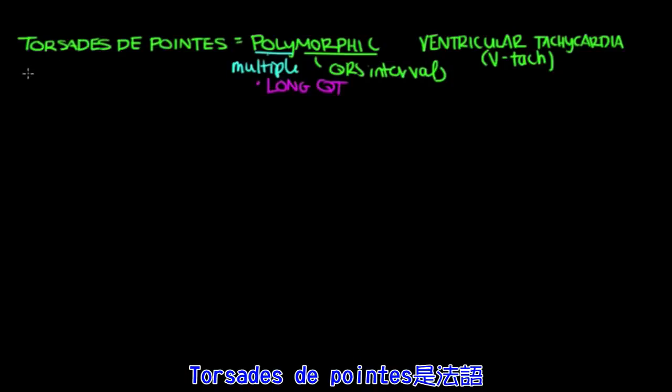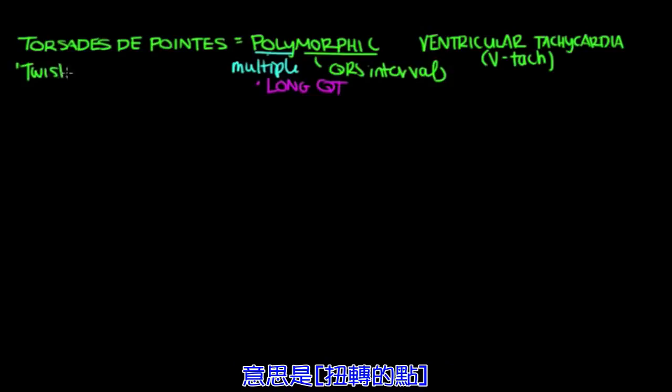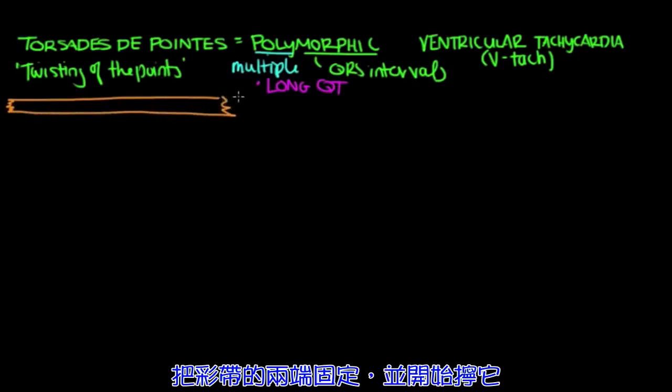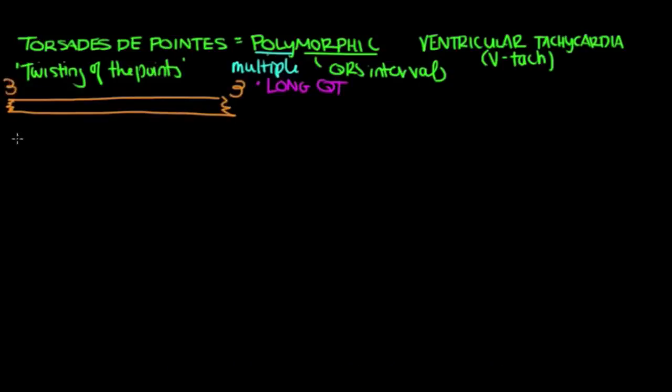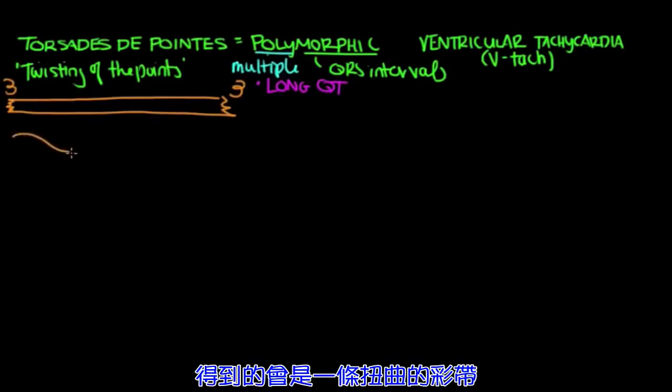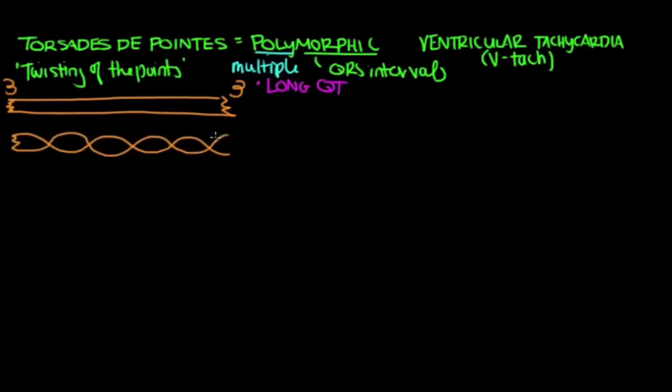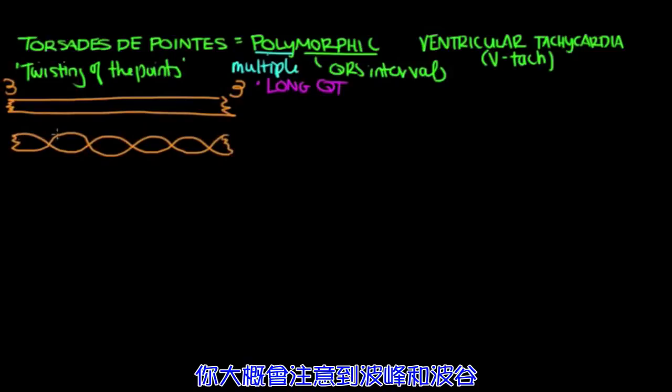Torsades de Pointes is actually French for twisting of the points. And what does that mean? Well, imagine you have a party streamer. Say you take the ends of that streamer and you twist them. What you'll get is a twisted party streamer that's going to look a lot like this.